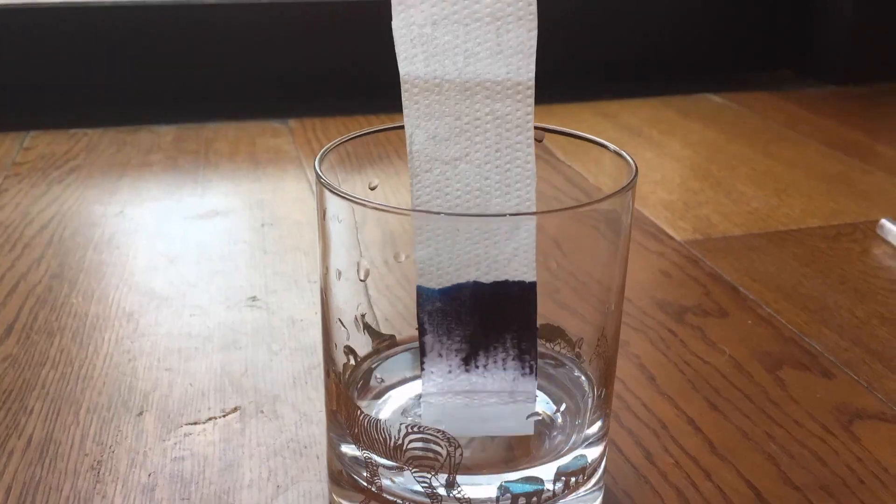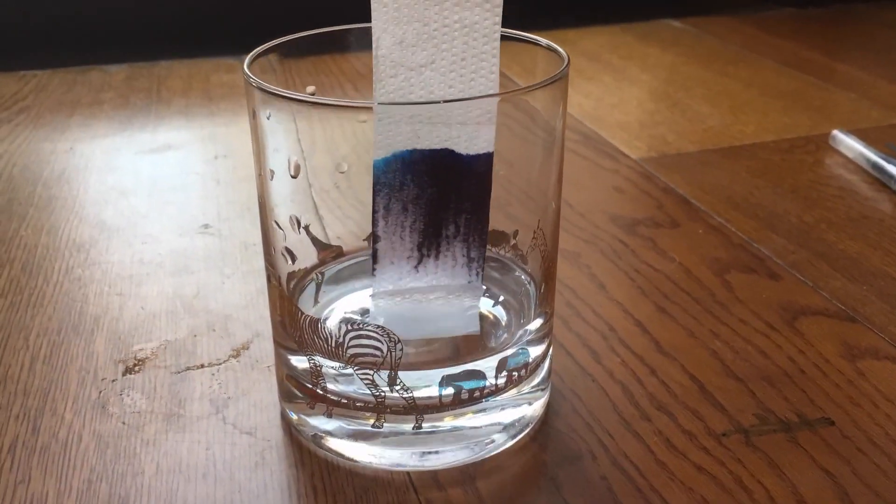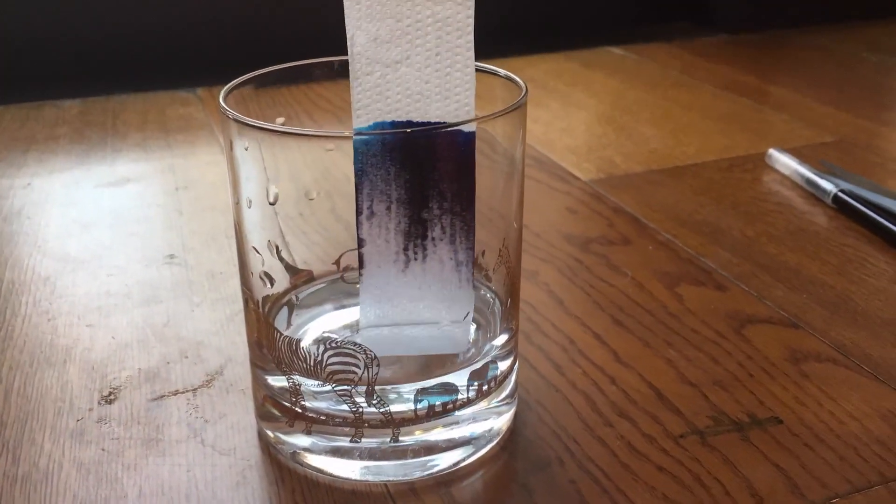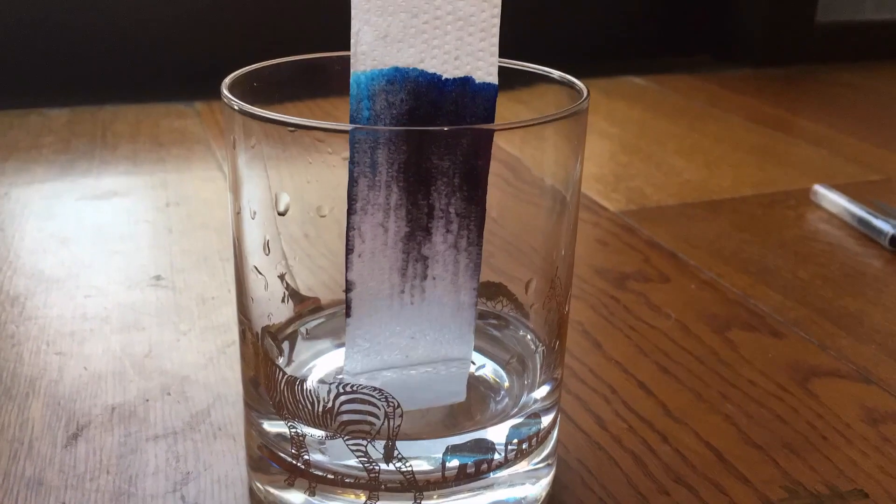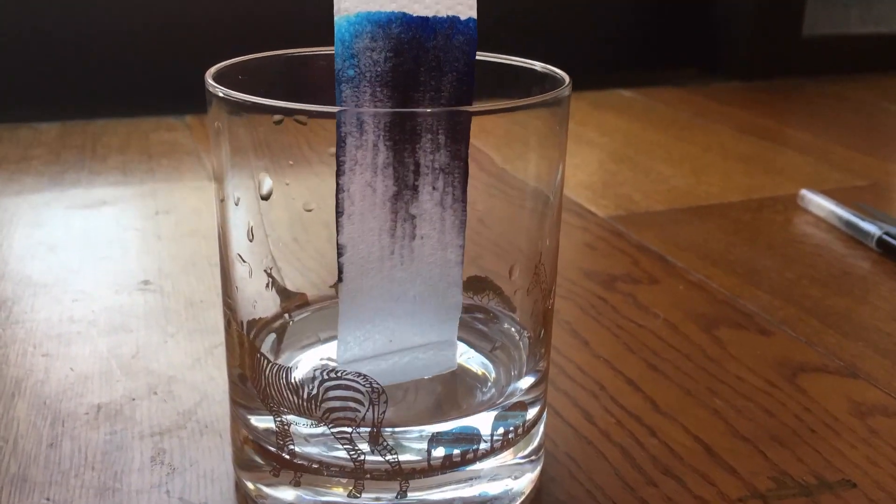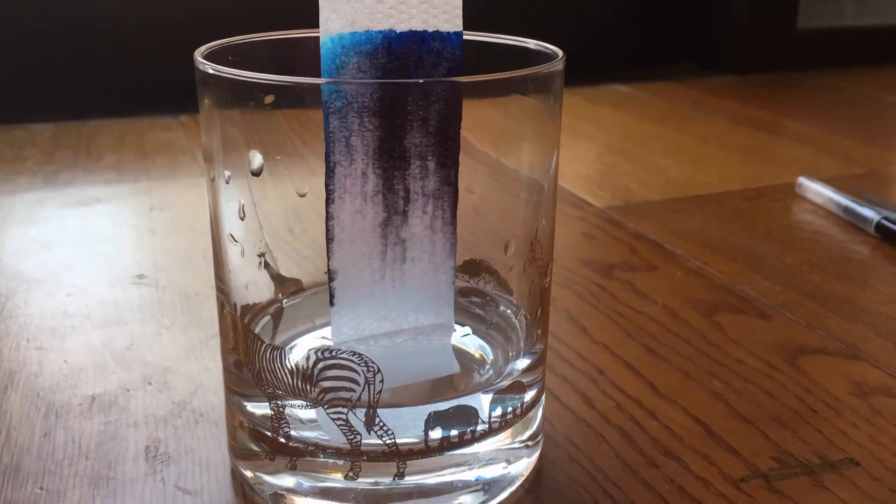But no matter what we use, the molecules of the constituent colors travel at different rates through the filter, thereby separating the molecules into layers that appear as different colored lines on the filter material.